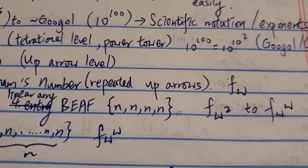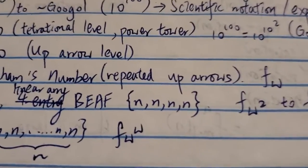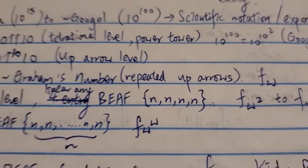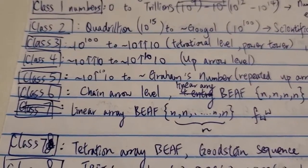The basic chain arrow is just f of omega squared, which is same as for entry BEAF. Anyway, they are all class 6, in my opinion.